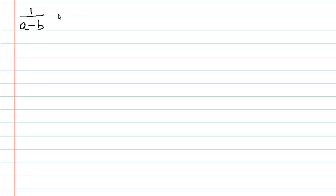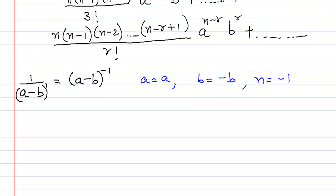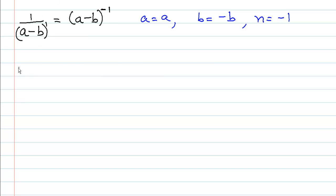Let us understand this with a concrete example. Consider 1/(a - b). Now 1/(a - b) can be written as (a - b)^(-1). So in this case the value of a is a, the value of b is -b (because we have minus b), and the value of n is -1, which is not a natural number. So let us apply the formula we have just written.